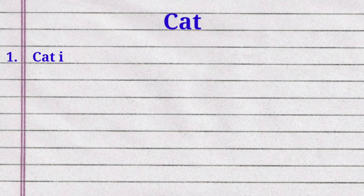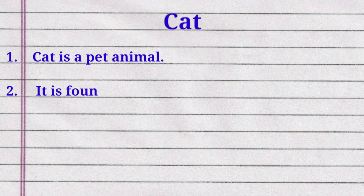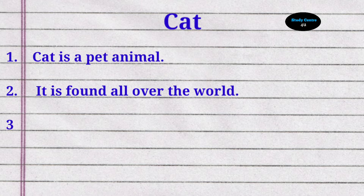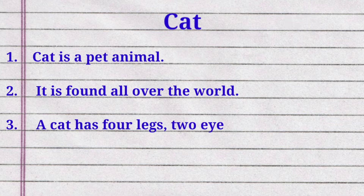First line: cat is a pet animal. Second line: it is found all over the world. Third line: a cat has four legs, two eyes, two ears and a tail.